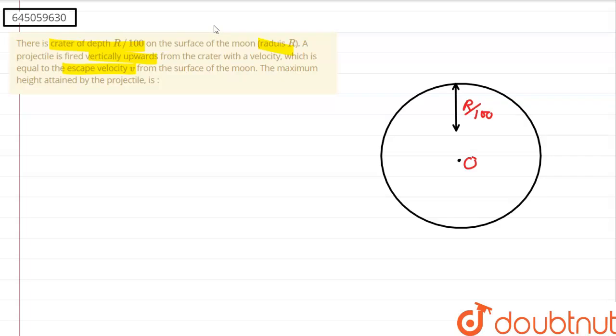The projectile is fired vertically from this point directly upwards with escape velocity ve and then it must have gone to a height. Let us consider the height h from the surface and this is the maximum height that it must have attained. Now we have to find the value of h here.